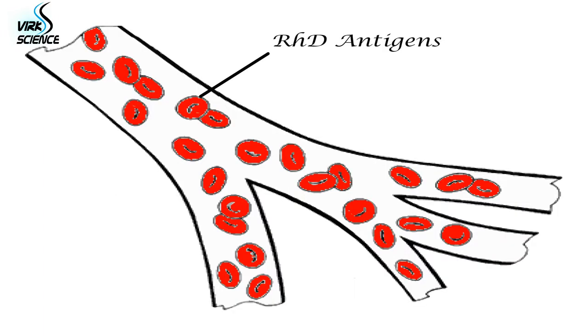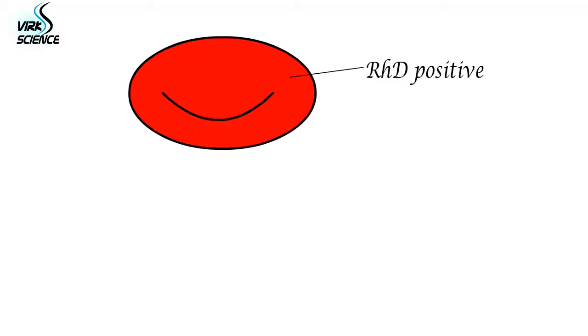Red blood cells sometimes have another antigen, a protein known as the RHD antigen. If this is present, your blood group is RHD positive.